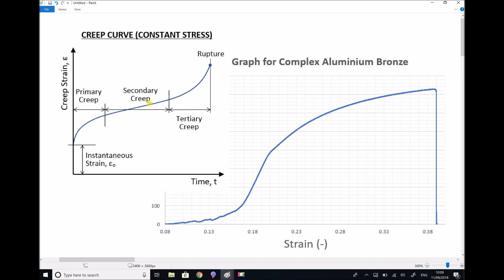But if we refer to our creep graph on the left, then in actual fact that isn't the case. And time is a huge variable. In fact, the only thing that we can infer from our stress-strain graph is the instantaneous strain. And that's the strain at time zero.